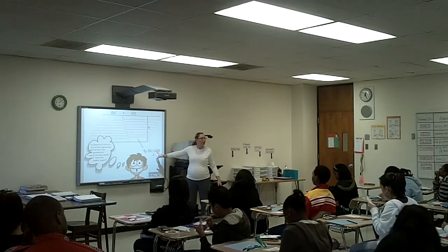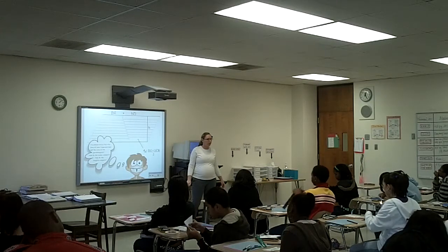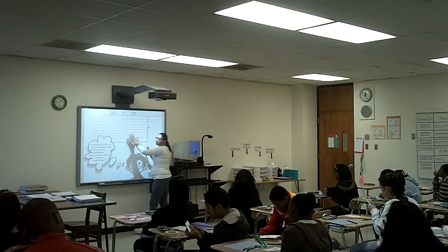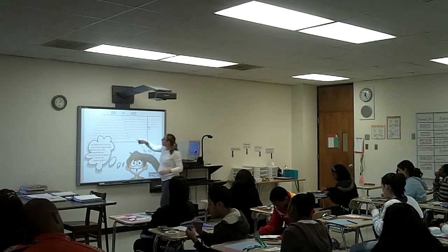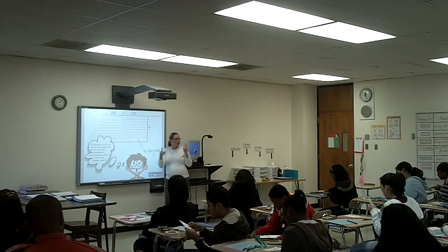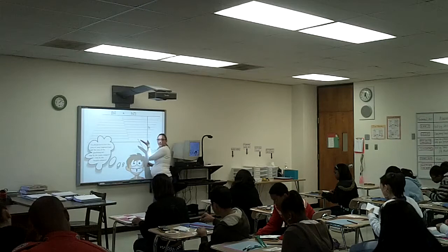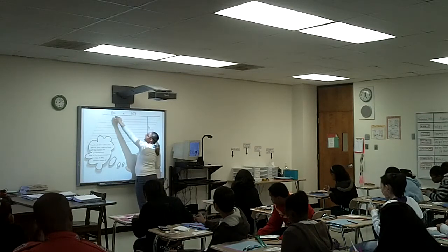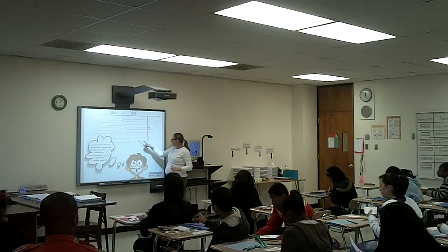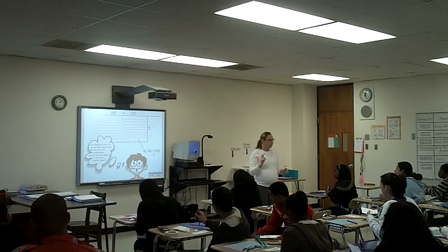The area of one trapezoid was base one plus base two times the height over two, right? It was half of that. But the area of the whole parallelogram is base times height. What's the base all together? The two bases together — base one and base two together — is the whole base. The height is still the height. So one trapezoid is half of a parallelogram.